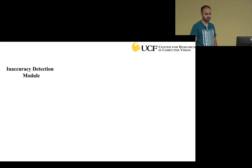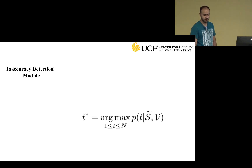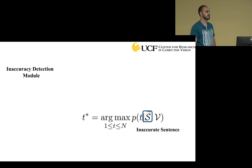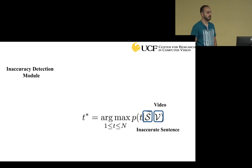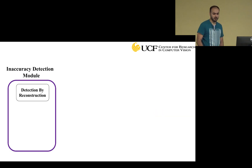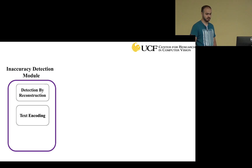The role of the inaccuracy detection module is to return the index of the inaccurate word, with indices between 1 to n assuming the sentence has n words. The inputs are an inaccurate sentence, which we denote as s-tilde, and the video. Our module has three sub-modules: detection by reconstruction formulation, textual encoding, and gated visual bias.